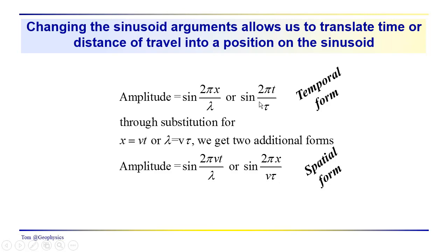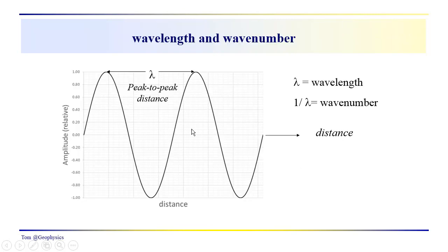We can also use these substitutions: x could be equal to the velocity times the time, or λ could be equal to the velocity times the period. So we can get these additional forms where the amplitude of the sine wave would be equal to sin(2πvt/λ), or sin(2πx/vτ). Temporal and spatial forms of this sinusoid.